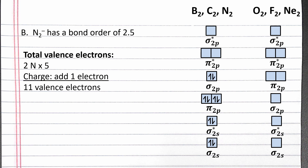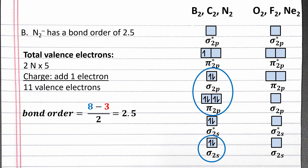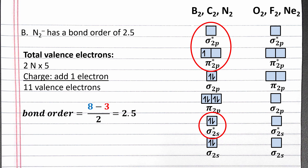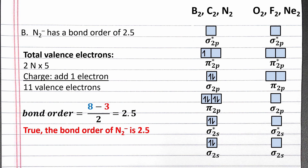Then two electrons to fill in the σ2p bonding molecular orbital, and finally one electron in the π2p antibonding molecular orbitals. To calculate bond order, we take the number of electrons in bonding molecular orbitals, subtract the number of electrons in antibonding molecular orbitals, divided by 2. The bonding molecular orbitals — the σ2s, π2p, and σ2p — are circled in blue. We have 8 electrons in these orbitals. The antibonding molecular orbitals, circled in red, have a total of 3 electrons. So 8 minus 3 is 5, divided by 2 is 2.5. The second statement is true: the bond order of N₂⁻ is 2.5.